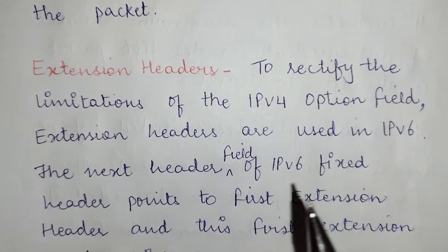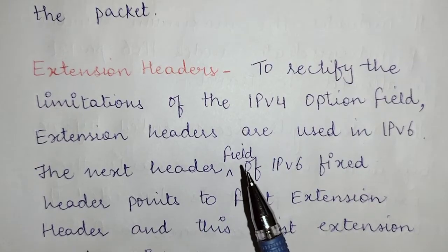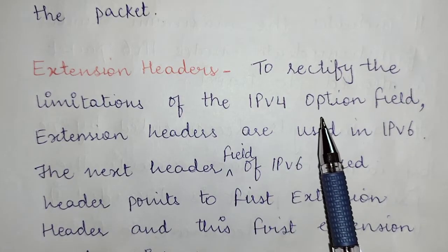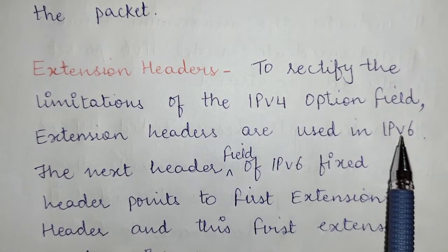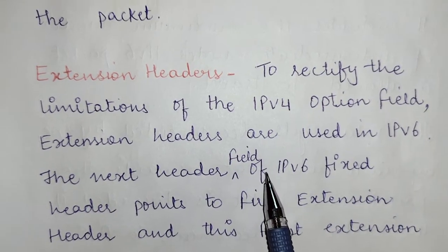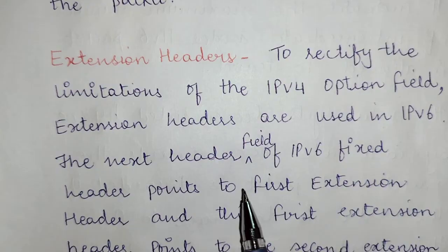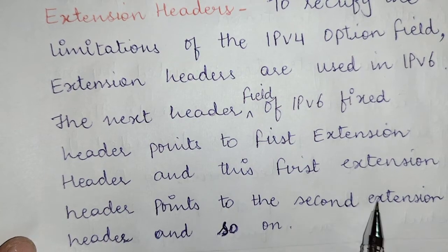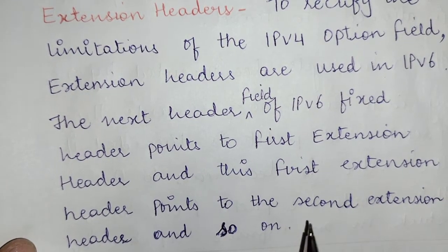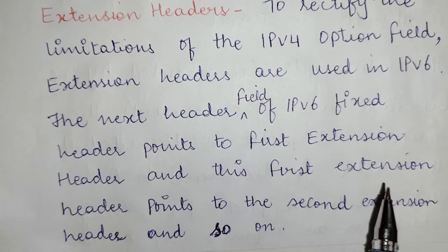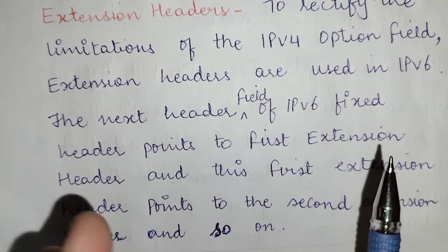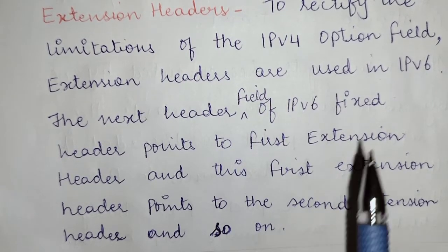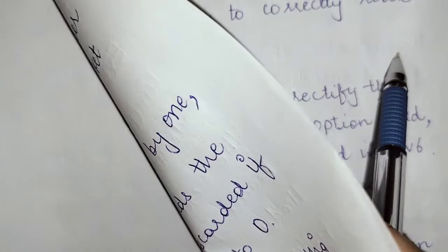The last field is the extension headers. These are used in IPv6 to rectify the limitations of the IPv4 option field. The next header field of the IPv6 fixed header points to the first extension header, which then points to the second extension header and so on if further extension headers exist.